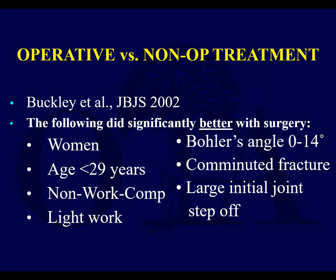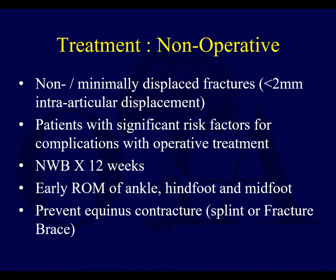Subgroup analysis showed a significant difference in favor of surgery when workers' compensation patients were excluded — meaning workers' comp patients don't do well if you operate on them. There was a greater satisfaction rate with surgery, and ORIF for calcaneus fractures is less expensive when you think about time off work and additional subtalar fusion surgeries needed down the road. Other subgroup results showed women did better with surgery, Böhler's angle 0–14 did better with surgery, as did younger patients, non-workers' comp patients, those with lighter work activities, comminuted fractures, and a large initial joint step-off.